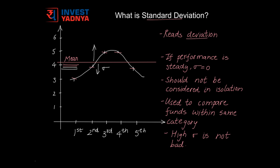The tricky part with Standard Deviation is it just reads deviation. It does not indicate whether it is up or down from the mean. Also, if a fund is performing at a steady pace, Standard Deviation is 0. So Standard Deviation should not be considered in isolation. It should be considered with other parameters like Alpha, Beta, Sharpe Ratio, etc., which we are going to learn in the subsequent videos to get the correct picture of the returns.